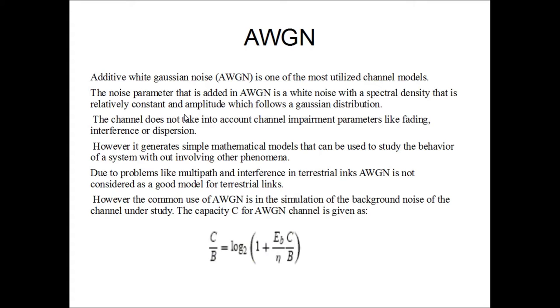However, it generates simple mathematical models that can be used to study the behavior of a system without involving other phenomena. But problems with the terrestrial rings of the channels don't allow AWGN to be used for multipath problems. However, AWGN has a common use in the simulation of background noise of the channel under study.